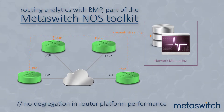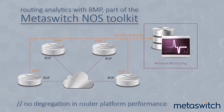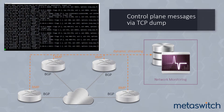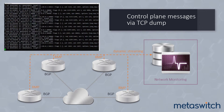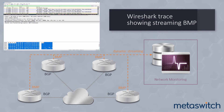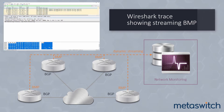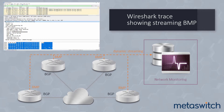Without any performance degradation, network operators can get a complete, real-time view of BGP state in every router. Using TCP dump, you can see messages flowing from the MetaSwitch control plane to a network monitoring collector. Opening these messages in Wireshark, you can see the route monitoring messages appear as live updates with full details of the information the control plane received.